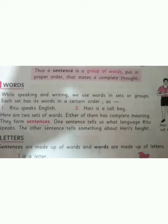Next we have words. While speaking and writing we use words in a set or group. Each set has its own words in a certain order, as in: Ritu speaks English. Here are two sets of words — either of them has a complete meaning, so they form sentences. One sentence tells us what language Ritu speaks; the other tells us something about Hari's height.